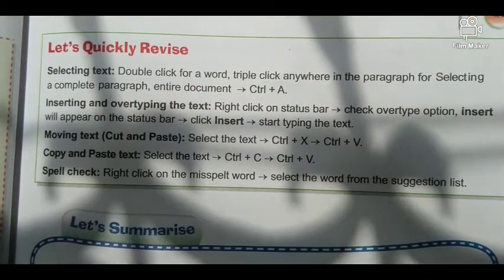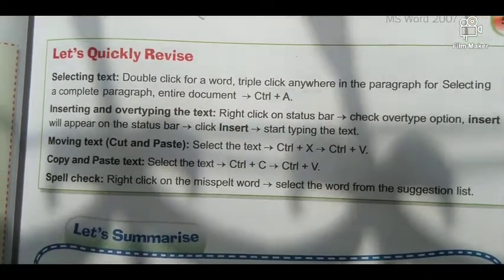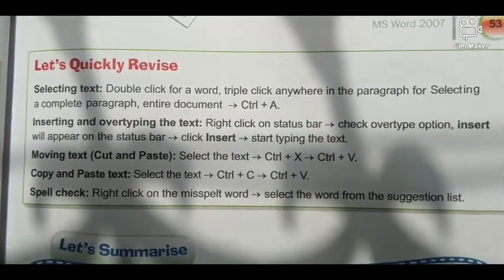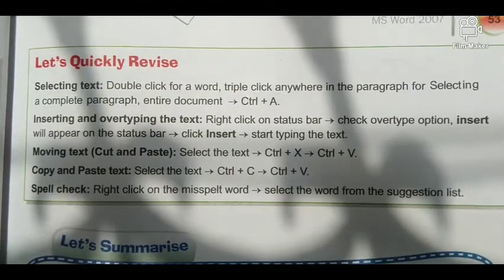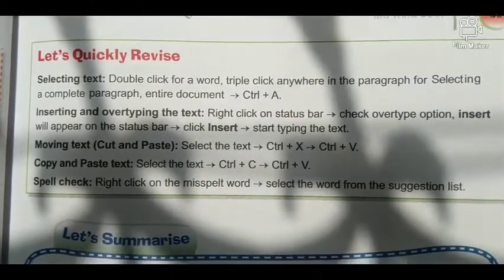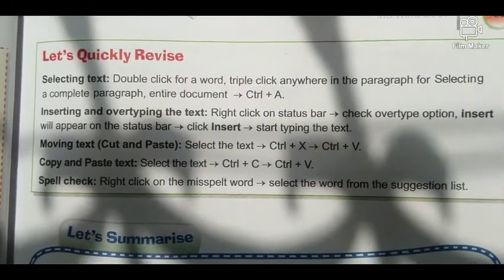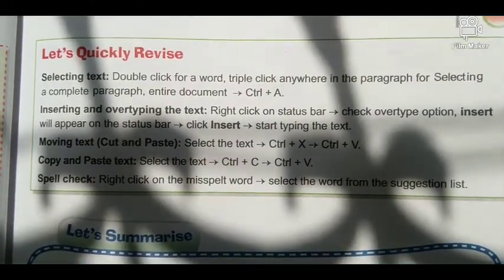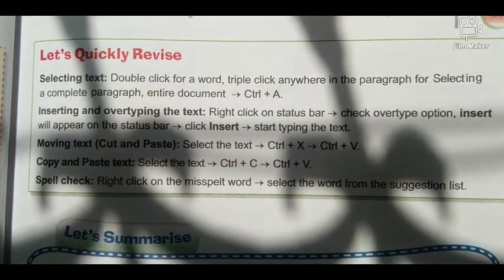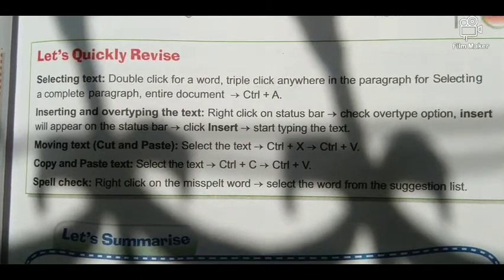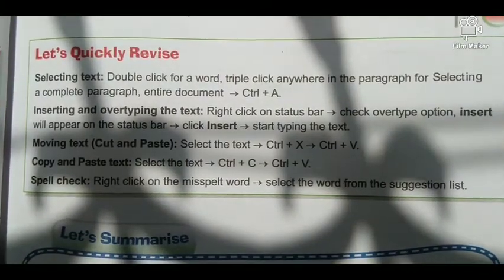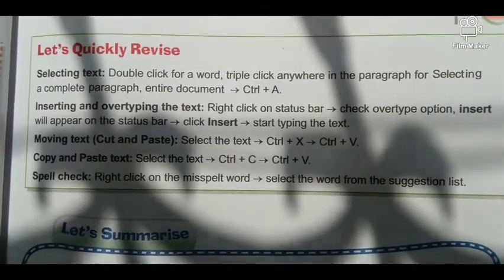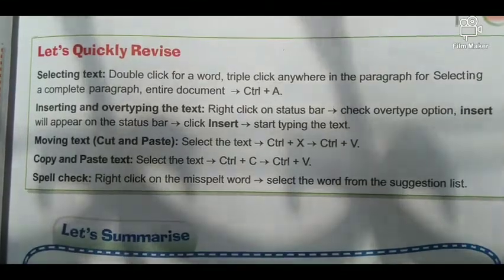Hello and welcome everyone. We already completed MS Word 2007, so today we will start with a quick revision on selecting text. Double click for a word, triple click anywhere in the paragraph. For selecting a complete document, use Ctrl plus A.